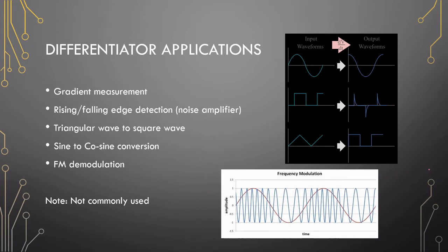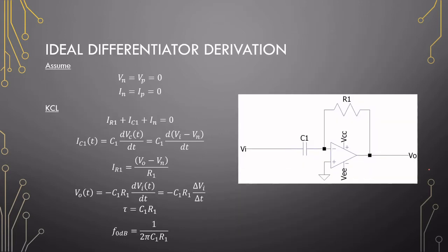Let's look at the ideal differentiator. Basically it's a capacitor coupled into an op-amp and a resistor for feedback. If we assume the op-amp is ideal, follow Kirchhoff's current law, and remember that the current in a capacitor is a change in voltage over the change in time,